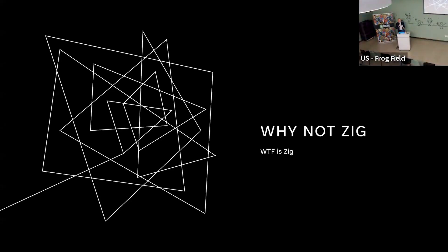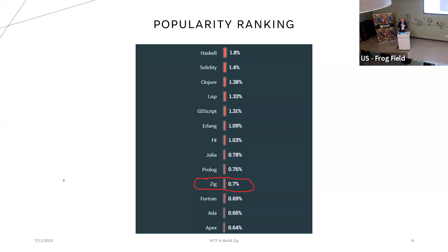So why not ZIG? This year's popularity listing from Stack Overflow shows ZIG at 0.7% — exactly between Prolog and Fortran. My favorite language before ZIG, Haskell, is still at least more than twice as popular as ZIG. But ZIG is a very new language. If you want to learn a language because it's popular or because it leads to jobs, this may not be a good idea. Interestingly, ZIG is considered one of the highest paid jobs, but that's probably because there are so few people who actually work full-time in it, so the data is skewed.